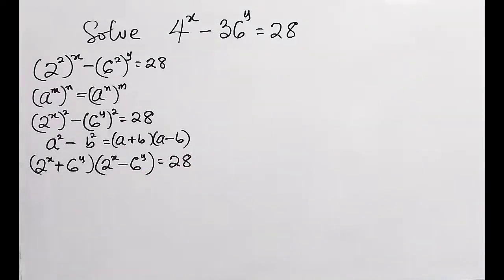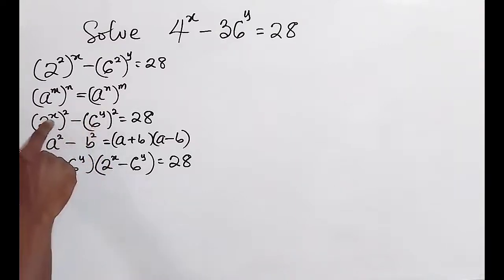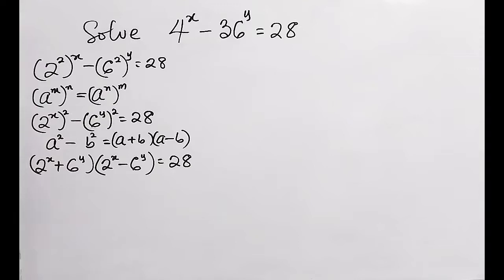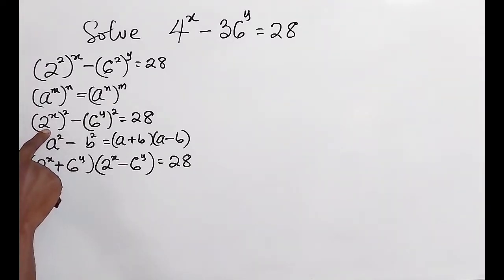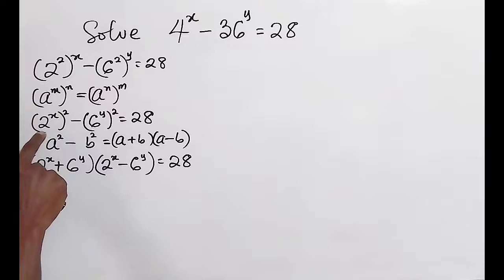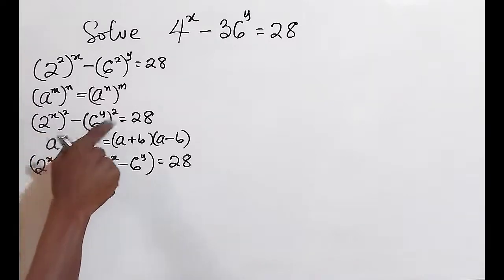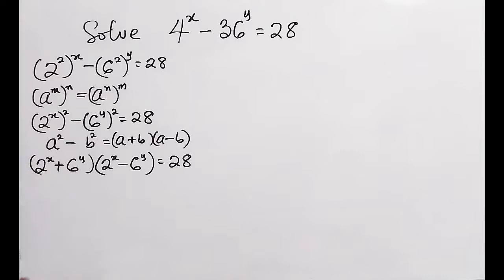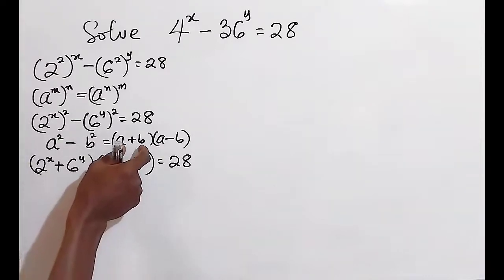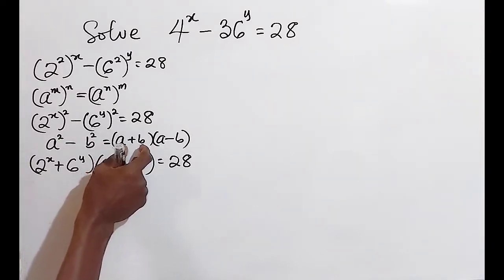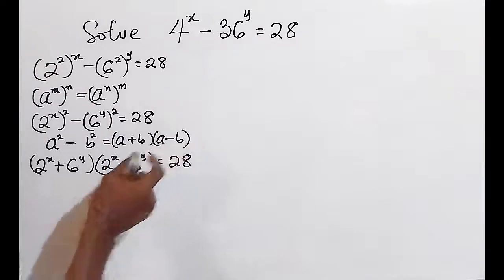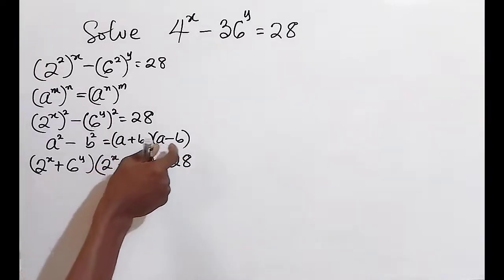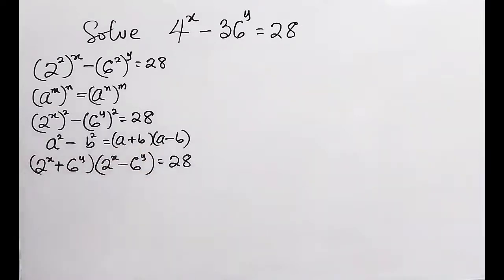Now, if you look at the bases, they are even numbers raised to any integral power, which means the result of each term will give us an even number. When we add or subtract two even numbers, we still get an even number, which implies that two even numbers multiplied together should give us 28.